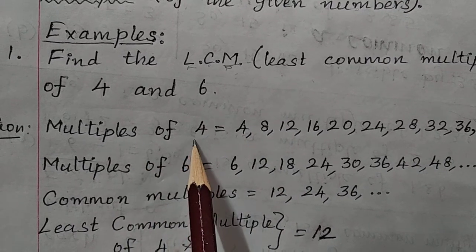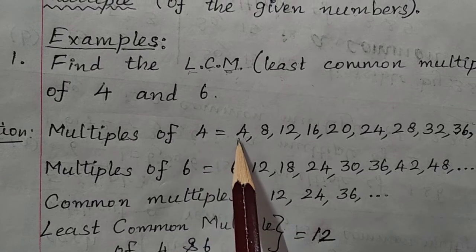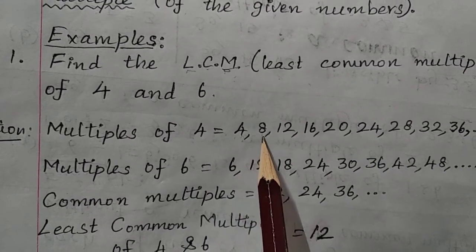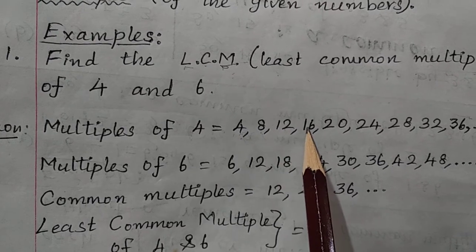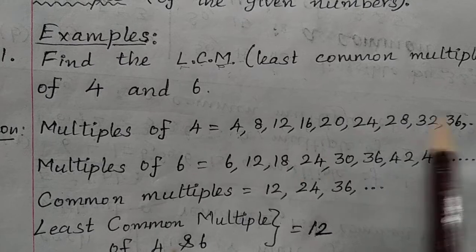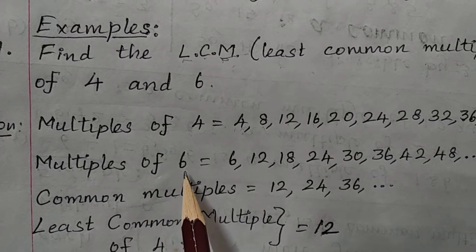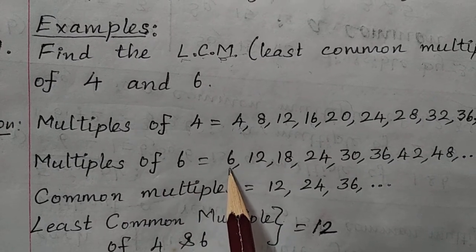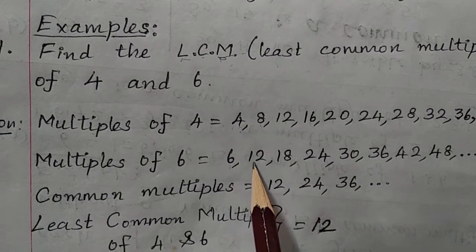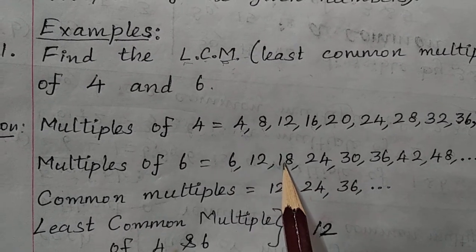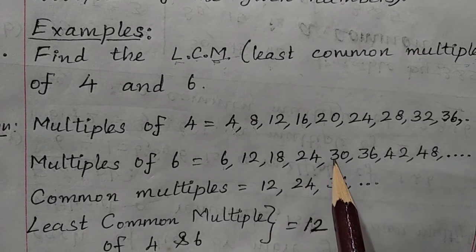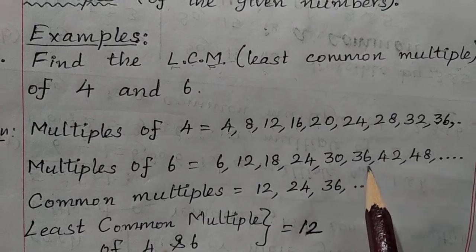What are the multiples of 4? Multiples of 4 start with 4 and they are getting increased by 4: 4, 8, 12, 16, 20 and so on. Multiples of 6 start with 6 and increasing by 6: 6, 12, 18, 24, 30, 36 and so on.